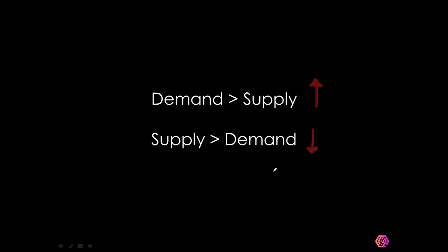Now, what about supply greater than demand? That is the opposite — the price will go down. We can easily say 'surplus,' because when there is plenty of anything the price falls. Can anybody give us an example of supply greater than demand? Think about it — seasonal produce, or anything that has become widely available.